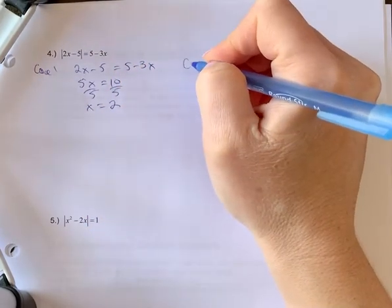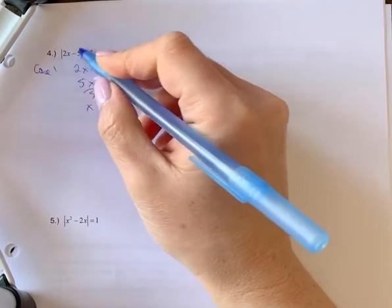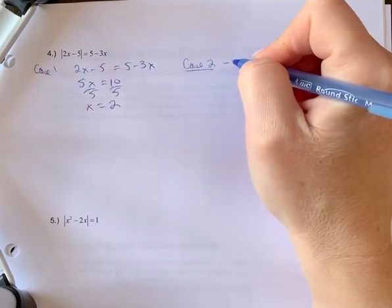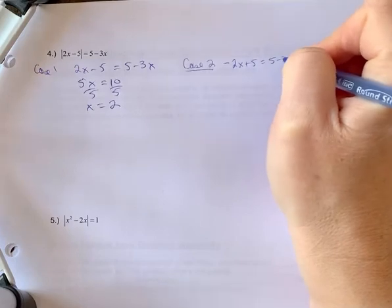Let's do case 2. In case 2, we're going to take the negative of this and multiply by negative 1, which would cause both signs to change. We're going to have negative 2x plus 5 equals 5 minus 3x.